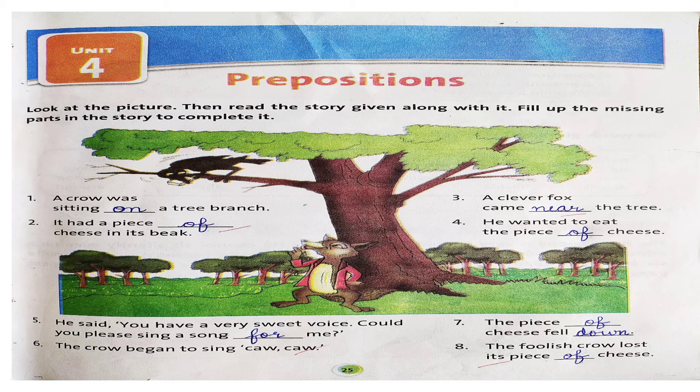So as you can see, there is a tree, there is a crow, there is a fox, right? The crow is holding something in its beak and the fox is looking at the crow. So you can easily figure out what the story is. I will be reading each and every sentence for you and we will fill up the blanks that are given. All these blanks should be filled up with prepositions, right?